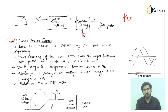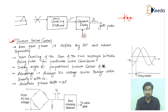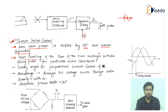The second method is inverse cosine control. We use cosine rather than sine because, as studied in bridge converters, Vd = Vd0·cos(α), and that cosine relation is used for control purposes. In inverse cosine control, each phase is shifted by 90 degrees and added separately, since we are operating individual thyristors. The zero crossing of the sum of two voltages initiates the firing pulse for the particular valve considered, as shown in the diagram.